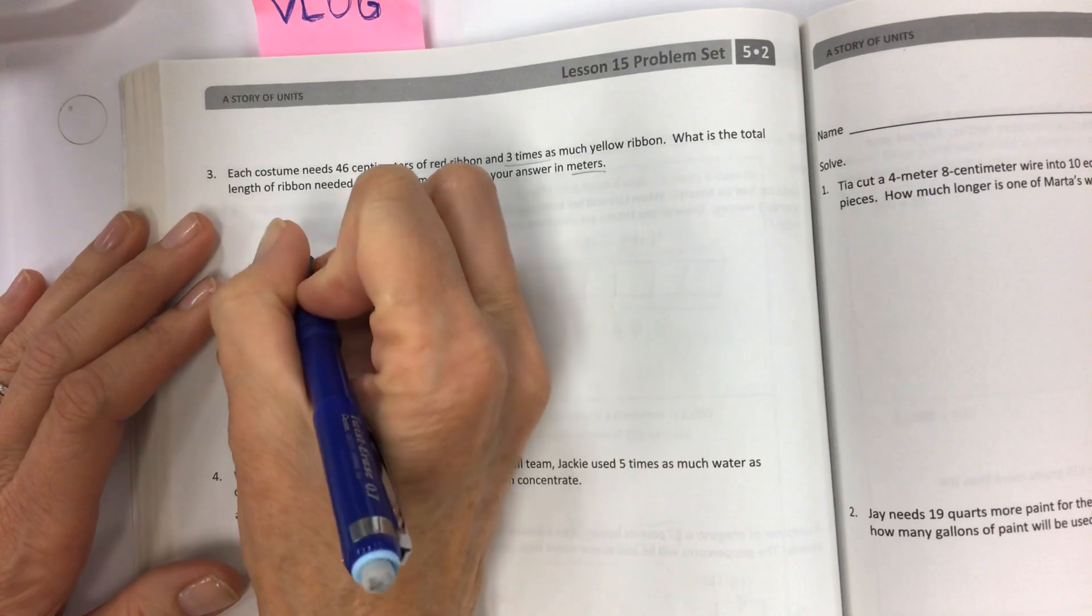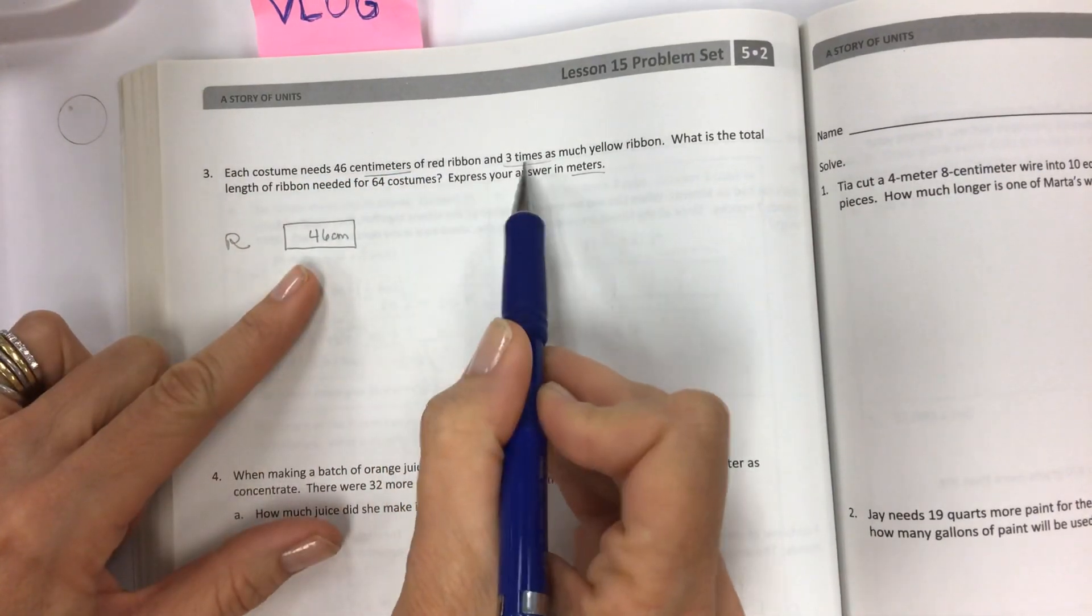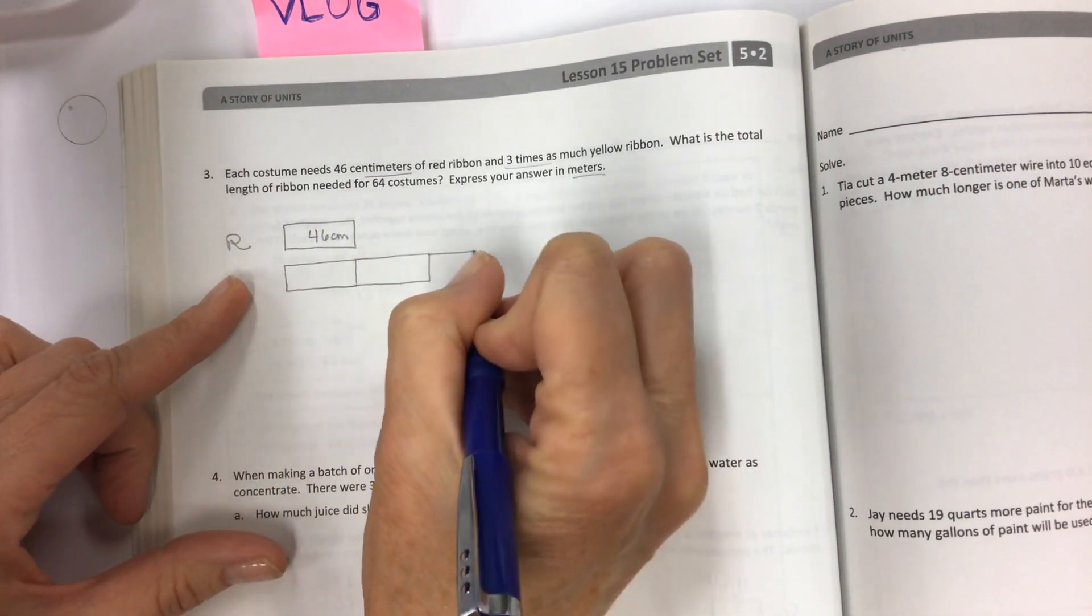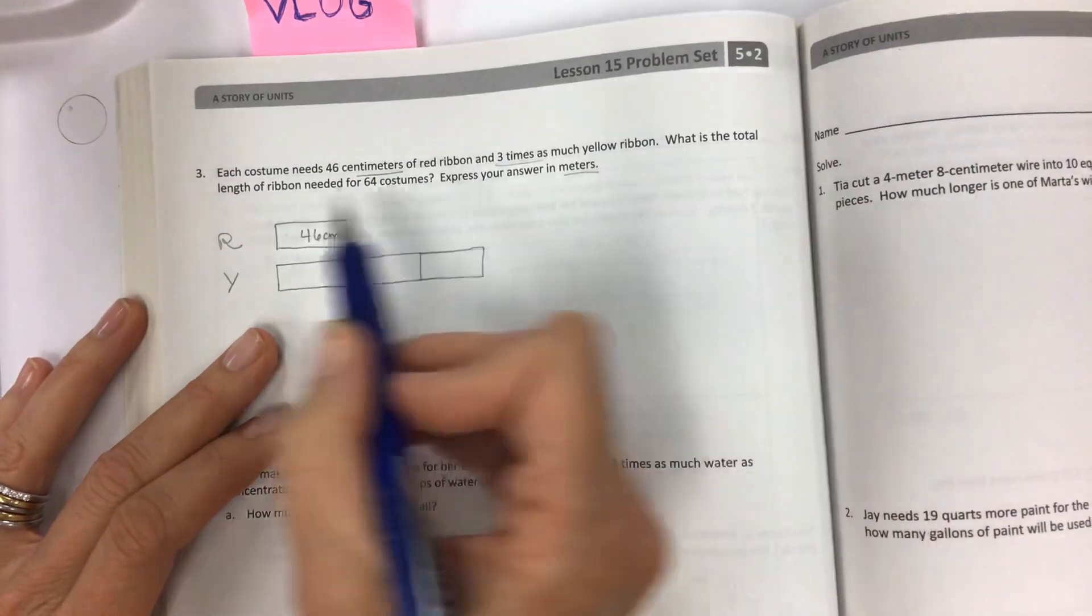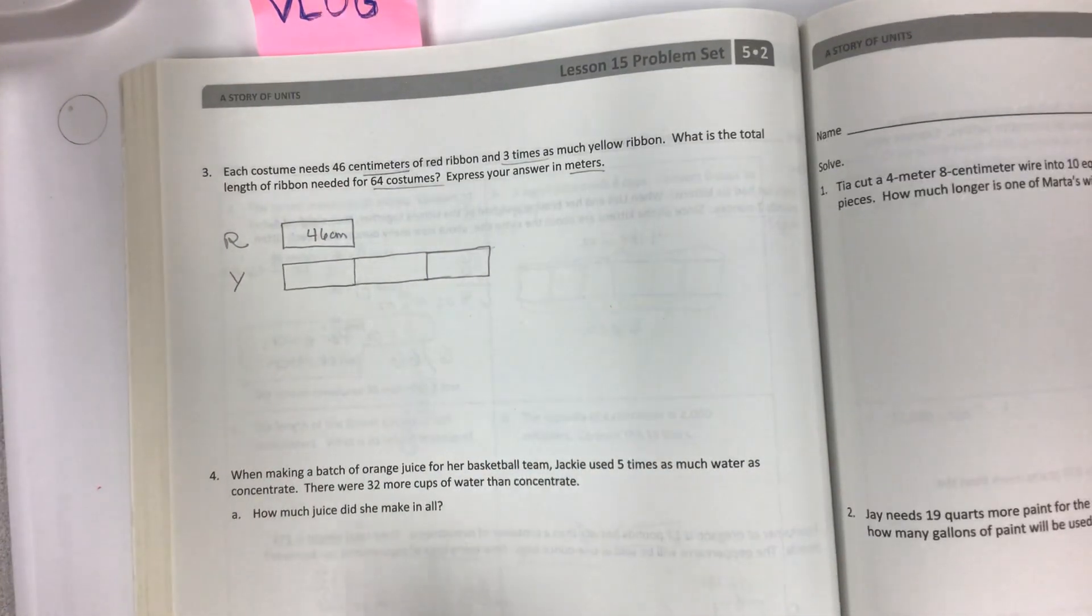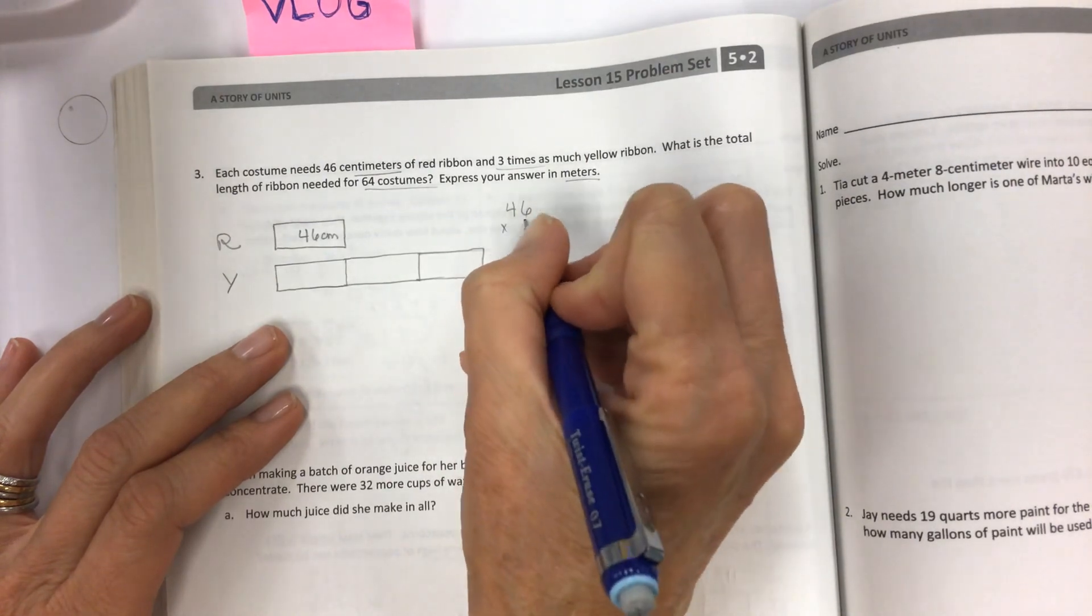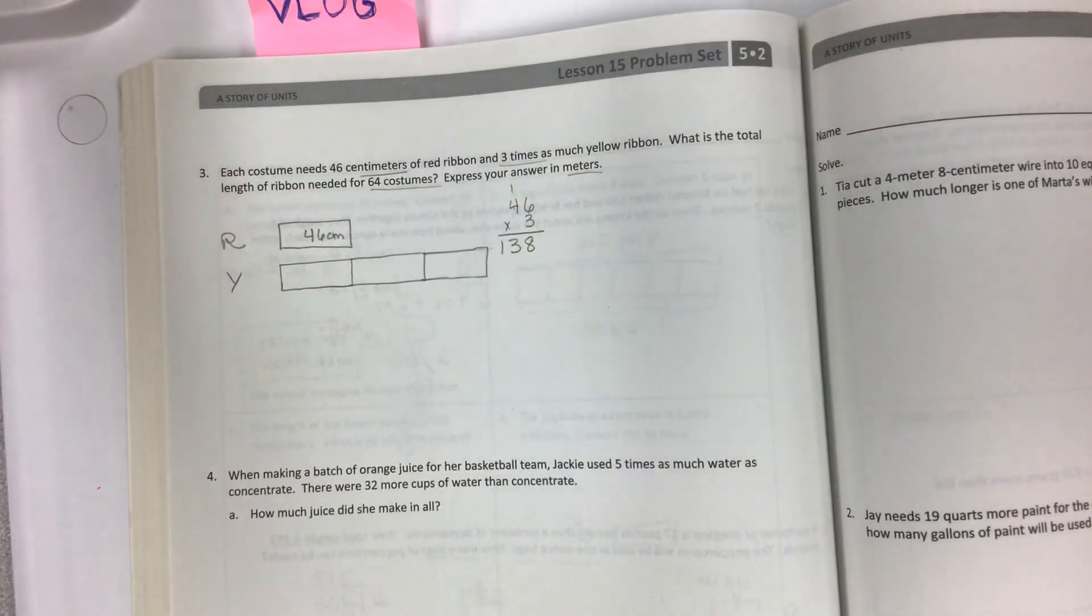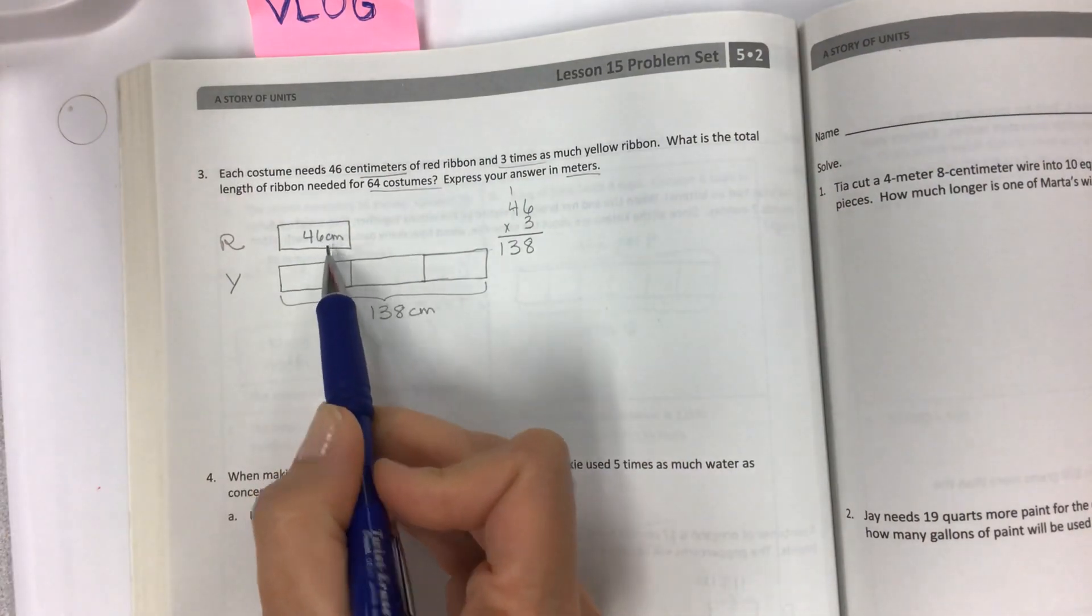If I have red ribbon and that's 46 centimeters and it's red. And 3 times as much yellow. If this is 1, 2, 3 times as much yellow. So what is the total length of ribbon needed for 64 costumes? Well, I don't know about 64, but let's just figure out one for right now. So if you have your 46 that's known, and I don't know this one, just do 46 times 3 so you can figure out the yellow. 3 times 6 is 18, 3 times 4 is 12 plus 1 is 13. So now we have 138 that you can label. And again, this is centimeters because it's 3 times 46 centimeters.